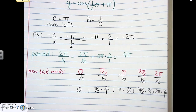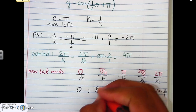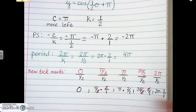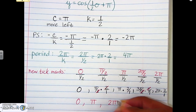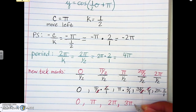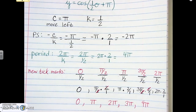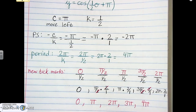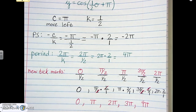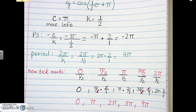Simplifying each of those: the twos cancel where applicable. We end up with zero, pi, two pi, three pi, and four pi as our new tick marks. If this process is confusing, refer back to Example 5 Part B where we explained it in detail.